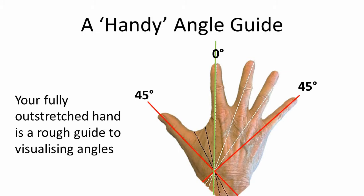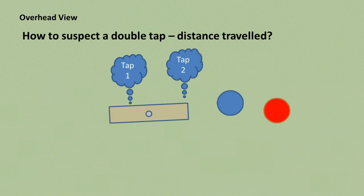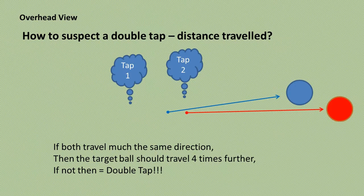Another way of detecting a double tap is relative distance. If the two balls travel in roughly the same direction, then the target ball should travel at least four times further. If it doesn't, then a double tap is almost certain to have occurred.